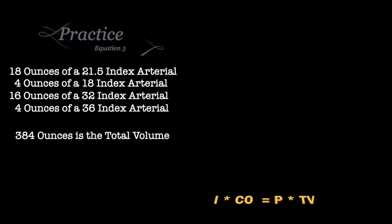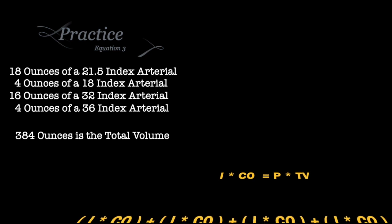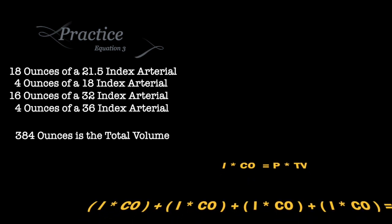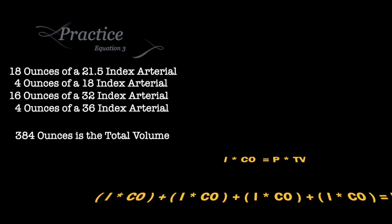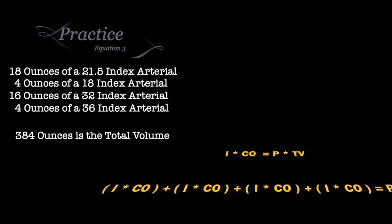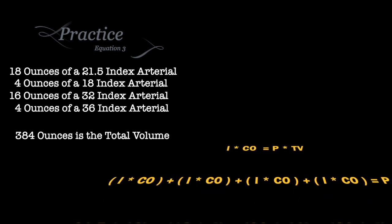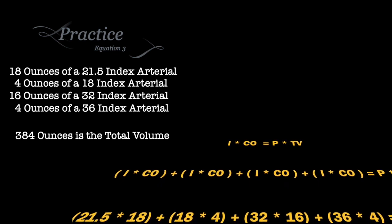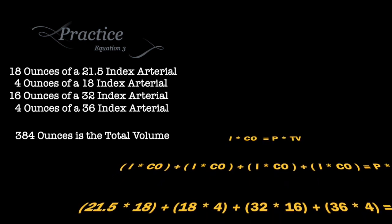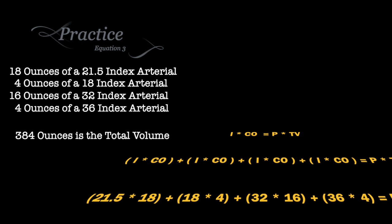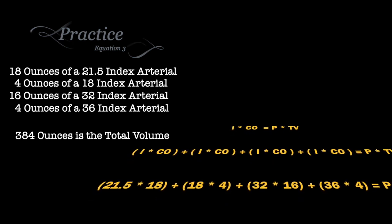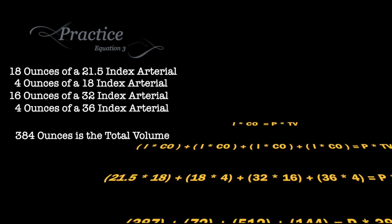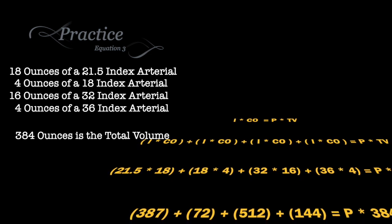We're going to use the same equation that we are already familiar with. Index times concentrated ounces equals percentage times total volume. But what we're going to do is add brackets for each arterial chemical separate. So each one will be index times concentrated ounces plus the next chemicals index times concentrated ounces.